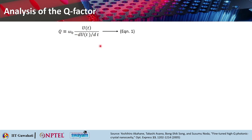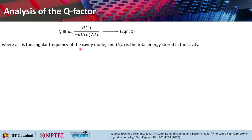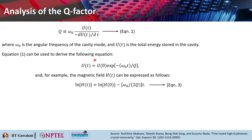Moving on to methods of analyzing the quality factor: the Q factor can be expressed as Q = ω₀U(t) / (−dU/dt), so the Q factor can be calculated by measuring the slope of the decay of any field. Here ω₀ is the angular frequency of the cavity mode and U(t) is the total energy stored in the cavity. From equation 1, U(t) = U₀ exp(−ω₀t/Q), and for example the magnetic field can be expressed as ln H(t) = ln H(0) − (ω₀/2Q)t.